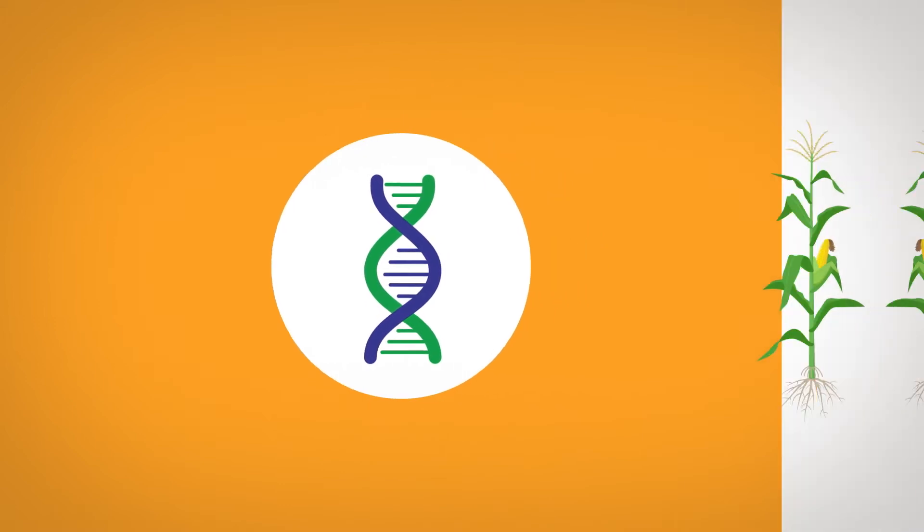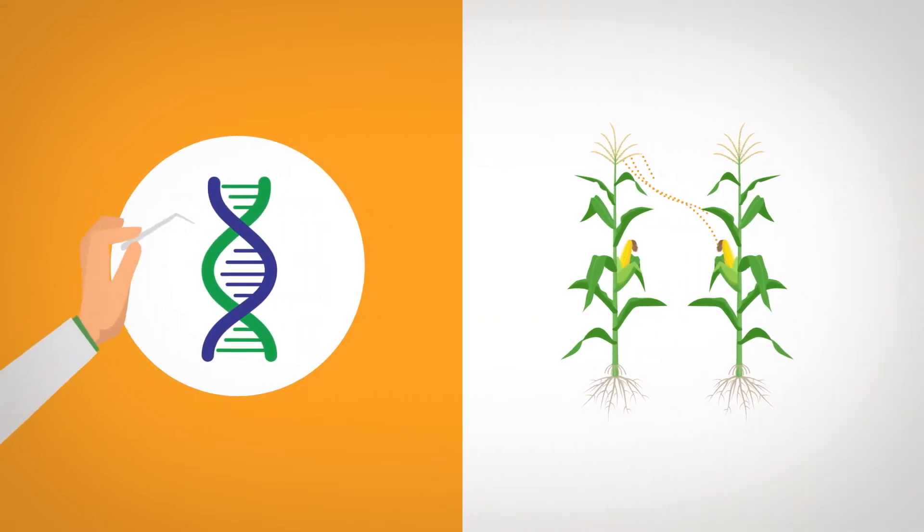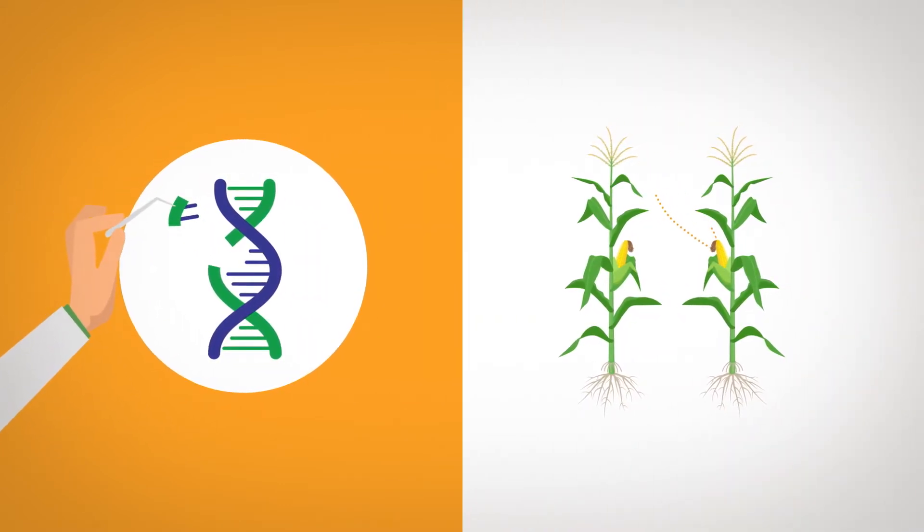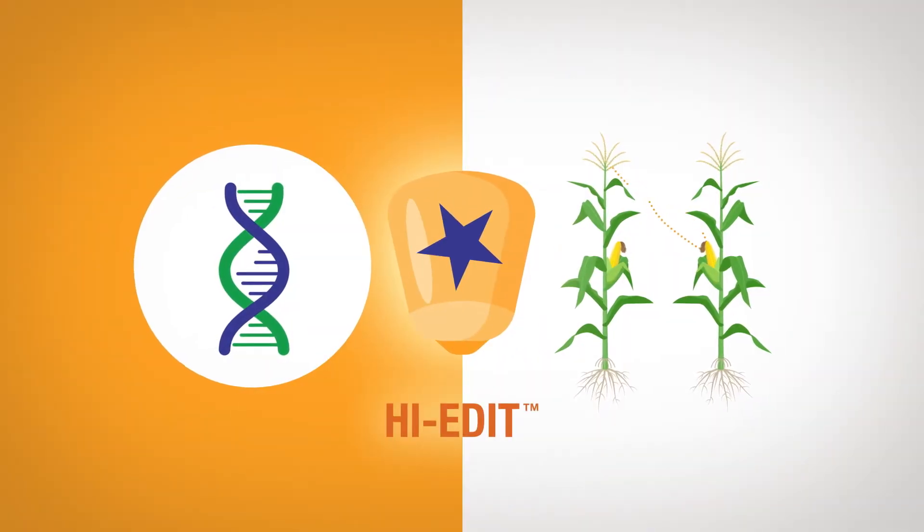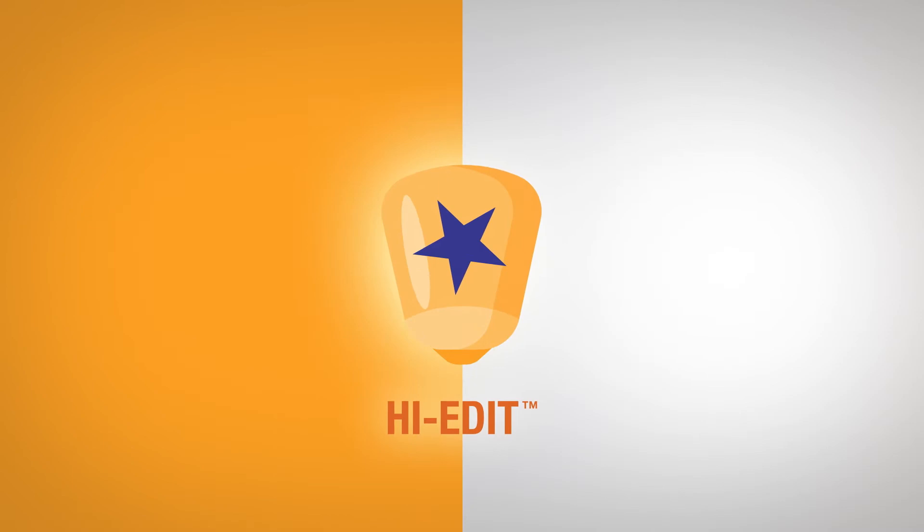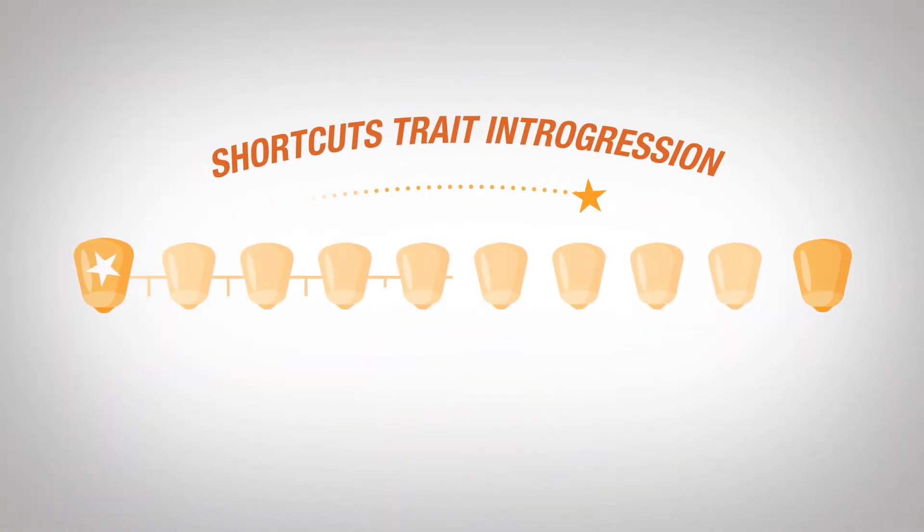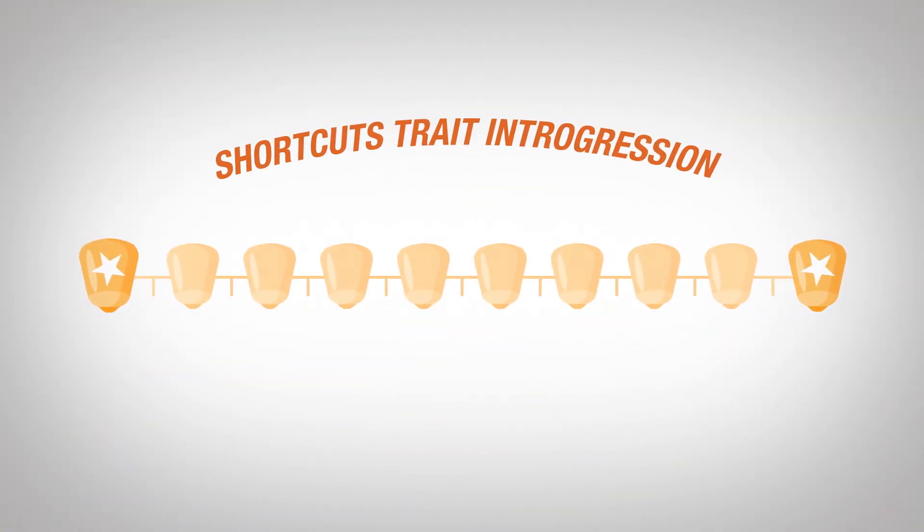While most seed providers use gene editing and doubled haploid breeding to get new traits into hybrids, only Golden Harvest has a revolutionary proprietary new method called Hi-Edit that blends the two processes and shortcuts trait introgression like nobody else in the industry can.